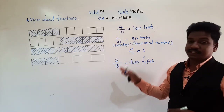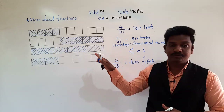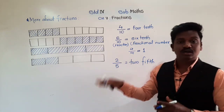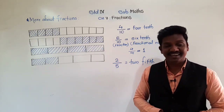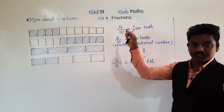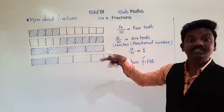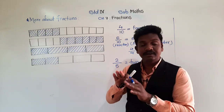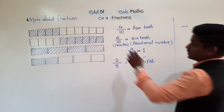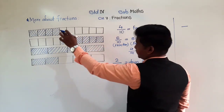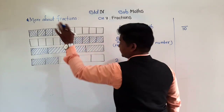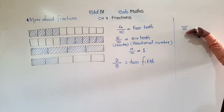So here, the fractions we have written are for the shaded portion of the figures. We can also write fractions for the unshaded portion. Now, if 4 upon 10 is the shaded portion and you want to write the fraction for the unshaded part — the part which is not shaded — how do we write that fraction? In the first strip, it is divided into 10 equal parts. The number below the bar remains the same because the strip is still divided into 10 equal parts.